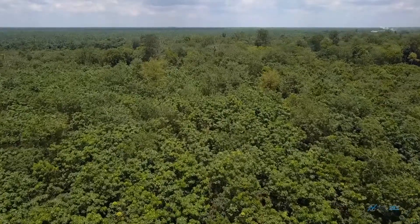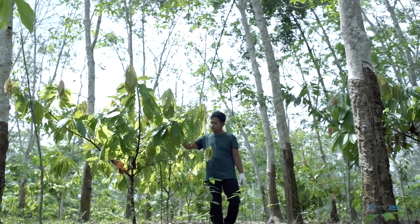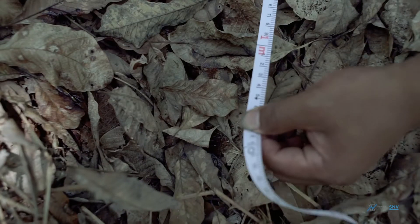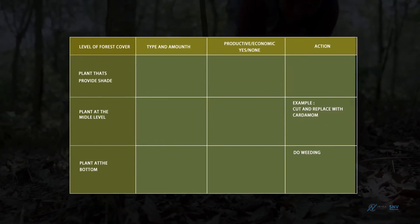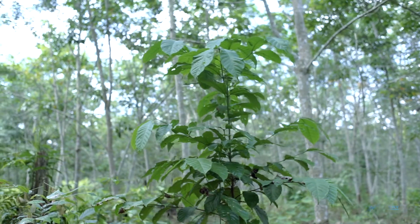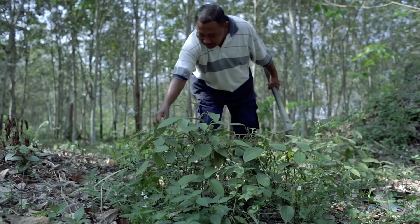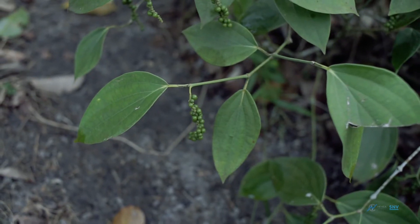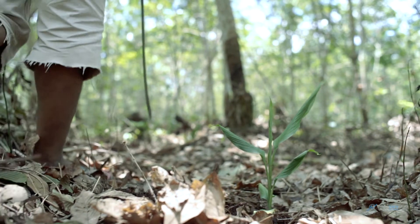Agroforestry planting techniques can be applied to monoculture rubber plantations. An analysis of vegetation in the rubber plantation has to be done, and farmers can record their analysis on observation forms. Things that need to be observed include the types and number of plants with 3 canopies, plants present above ground, and plants below ground, along with their production and economic value.